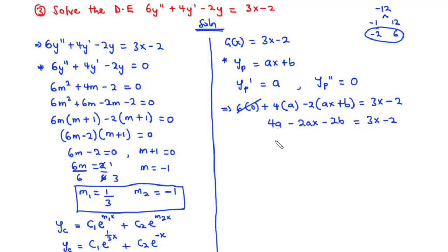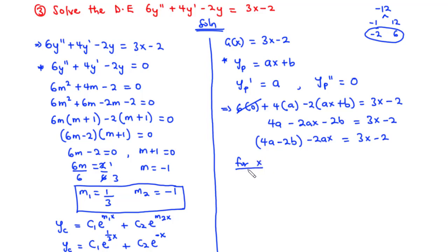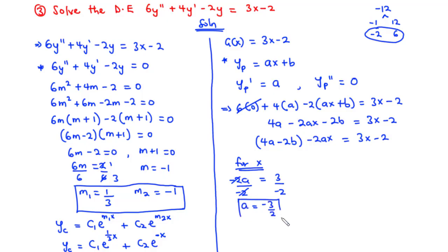Grouping like terms: (4a − 2b) + (−2a)x = 3x − 2. Comparing coefficients of x: −2a = 3, so dividing by −2 gives a = −3/2.